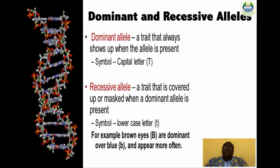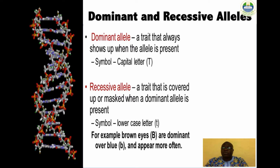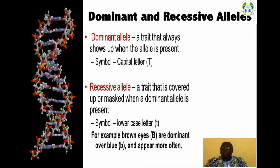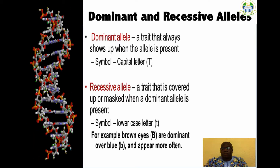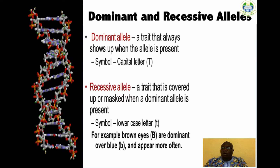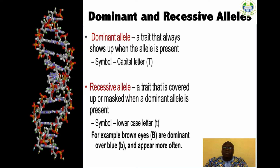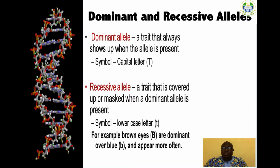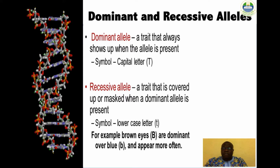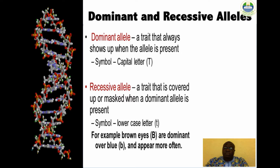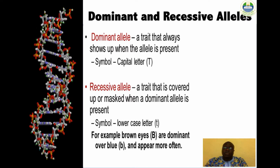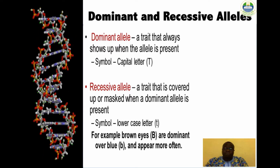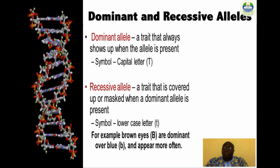A dominant allele is one whose trait always shows up in the organism when the allele is present. A recessive allele is masked or covered up whenever the dominant allele is present. A trait controlled by a recessive allele will only show up in organisms that inherit two recessive alleles. A dominant allele is expressed when paired with a recessive allele, while a recessive allele is only visible when paired with another recessive allele.